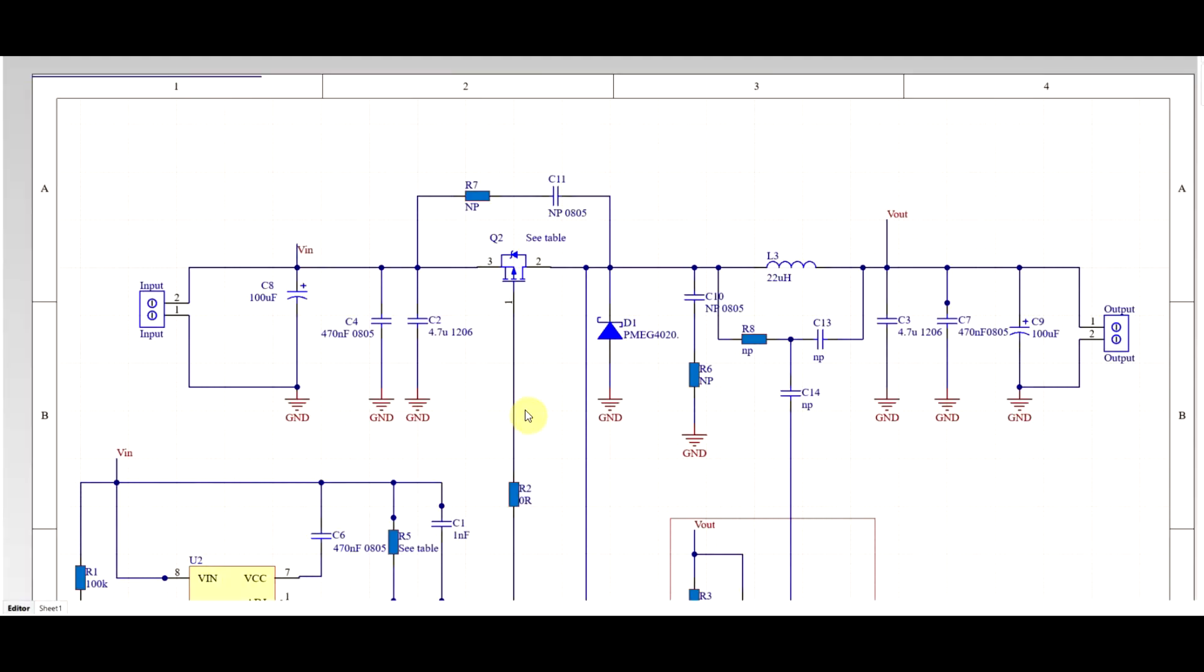So first thing to look at is the more or less three measures, which involve the layout design. Because there's always a way in which you can make things far worse from the circuit layout. So there are two things to highlight today,